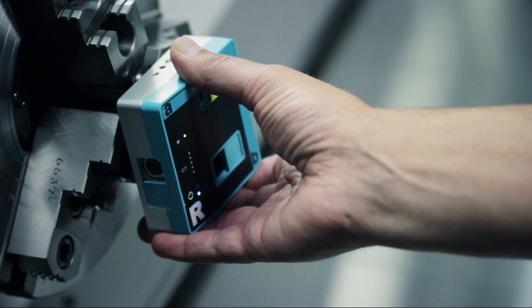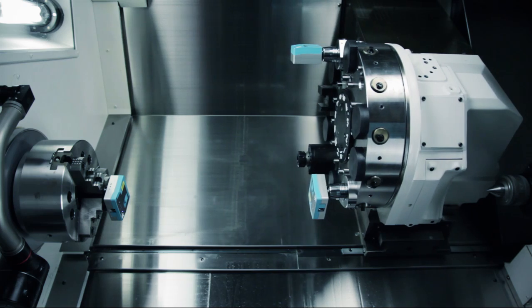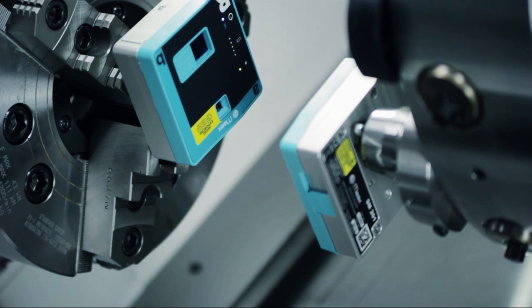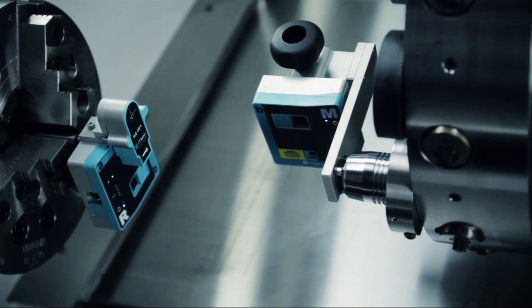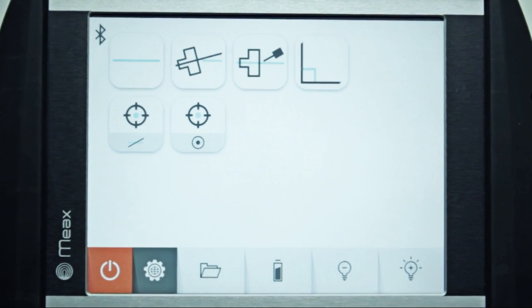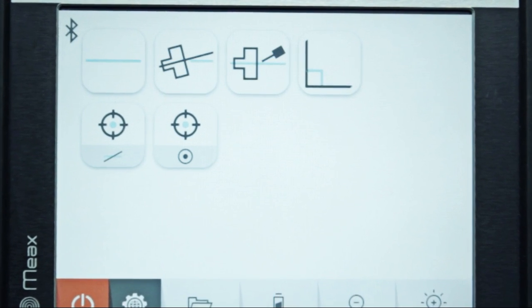The MEAX MT20 gives you a fast and easy way to carry out a full check of the geometric status in all machine movements in less than 30 minutes. The tailored software takes you through the measurements in four simple steps.